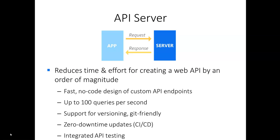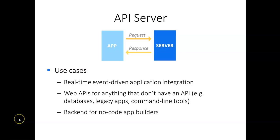The API server is git-friendly, it supports versioning, it allows designing robust production-ready APIs with zero downtime. Doing API testing is quite convenient because you can design Easymore workflows that will test your APIs. A few more words on where this API functionality can be used — you can use it for real-time integration with other applications where other applications will send HTTP requests to Easymore Server and it will respond with the payload.